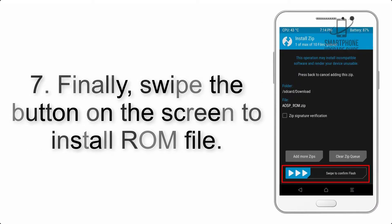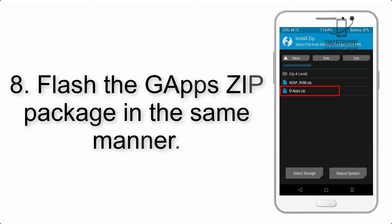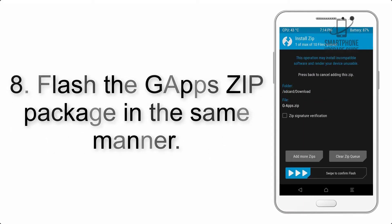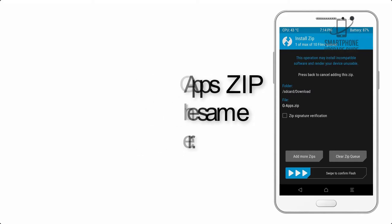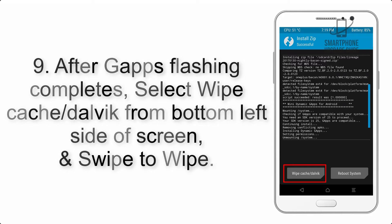Step 7: Finally, swipe the button on the screen to install the ROM file. Step 8: Flash the GApps zip package in the same manner. Step 9: After GApps flashing completes, select Wipe Cache and Dalvik from the bottom left side of the screen and swipe to wipe.